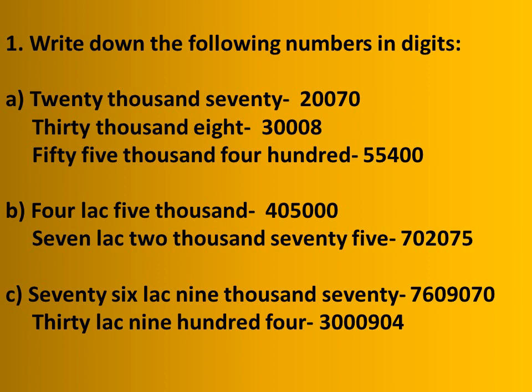Writing numbers in digits — we have done this in earlier classes as well. The numbers are: 20,070; 30,008; 55,400. Number b: 4,05,000; 7,002,075. Number c: 76,009,070; 30,00,904.